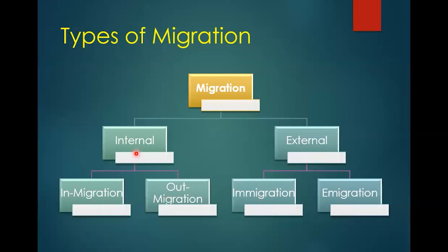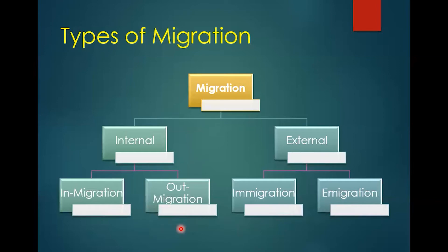In external migration, we use the terms immigration and emigration. When people from other countries come to Nepal, that is immigration. When Nepalese people go to other countries, that is emigration. Please understand these terms well — in-migration, out-migration, immigration, and emigration — because they are used in the different migration measures.